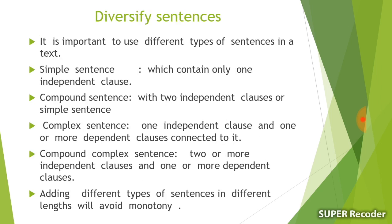While writing an academic text, it is necessary to diversify our sentences. Diversified sentences means using different types of sentences. There are three types of sentences: simple, compound, and complex. A simple sentence contains only one independent clause. For example: 'I am going to school.'